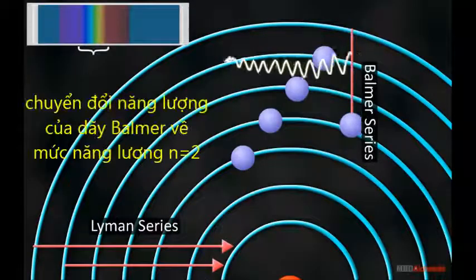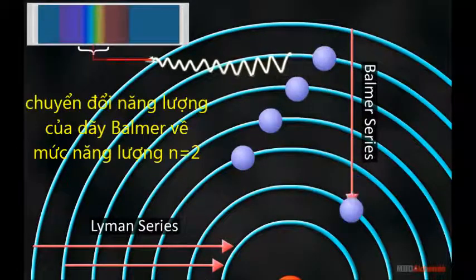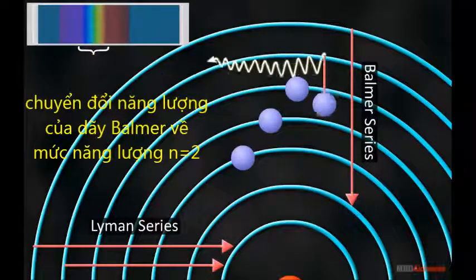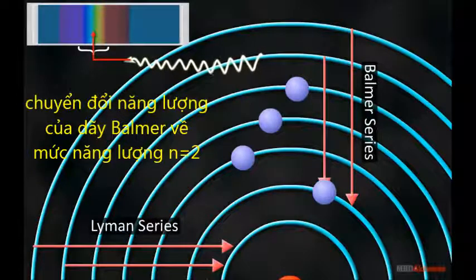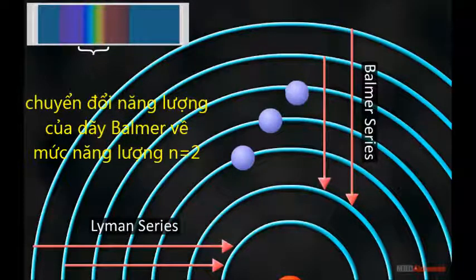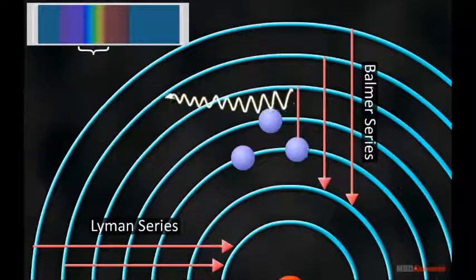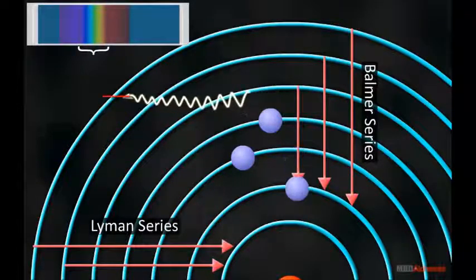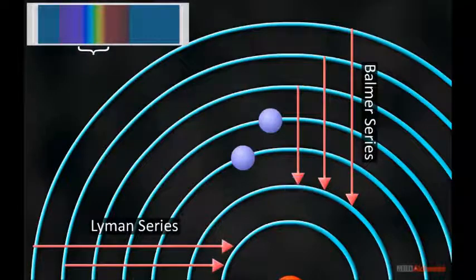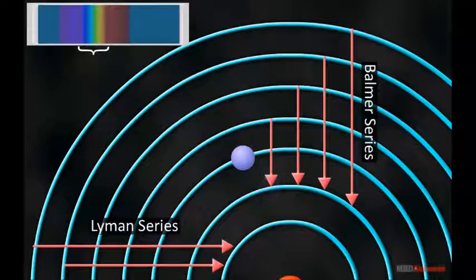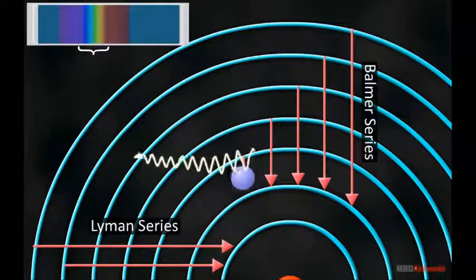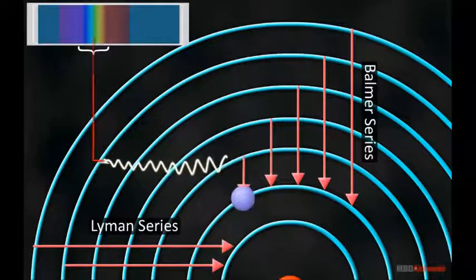When a transition from higher orbits to the second orbit occurs in the atom, Balmer series is obtained. The values of frequencies obtained in this transition lie in the ultraviolet region of the electromagnetic spectrum.